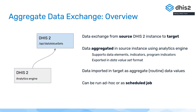A data exchange is essentially a transfer of data from what we refer to as a source instance of DHIS2 to a target instance of DHIS2. In the source, we're utilizing the Analytics API. Data will be aggregated in the source instance using the Analytics Engine, which means you can now support data elements, indicators, program indicators, reporting rates, and so on — pretty much everything you can do in a favorites in Analytics or using the Analytics API.